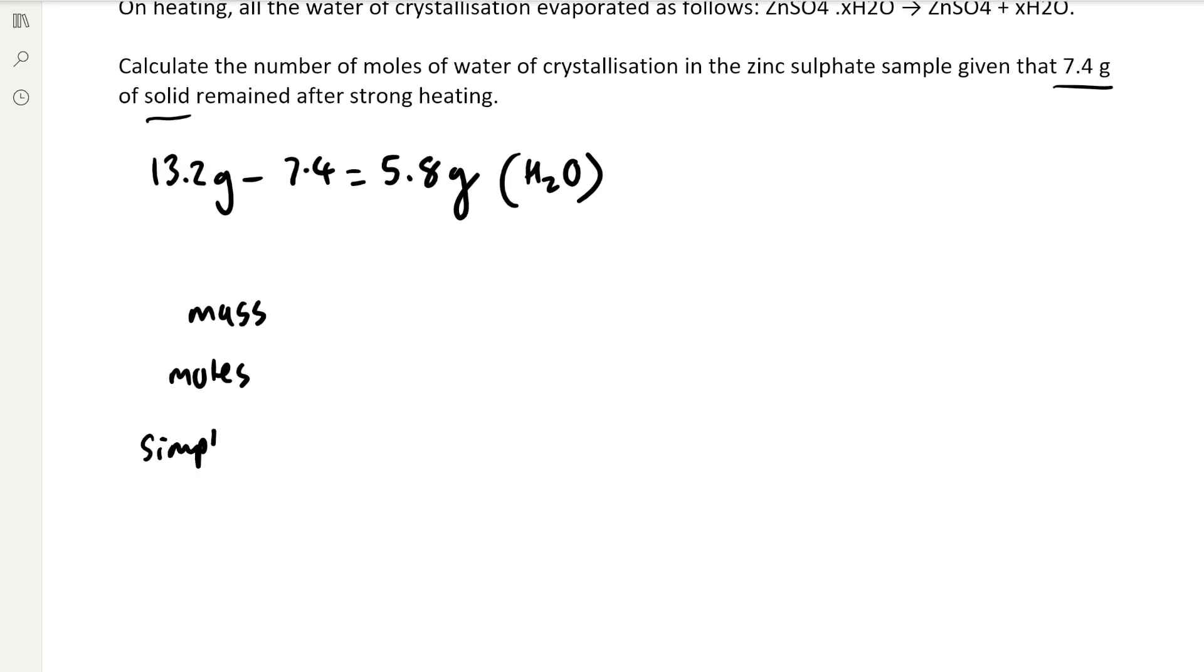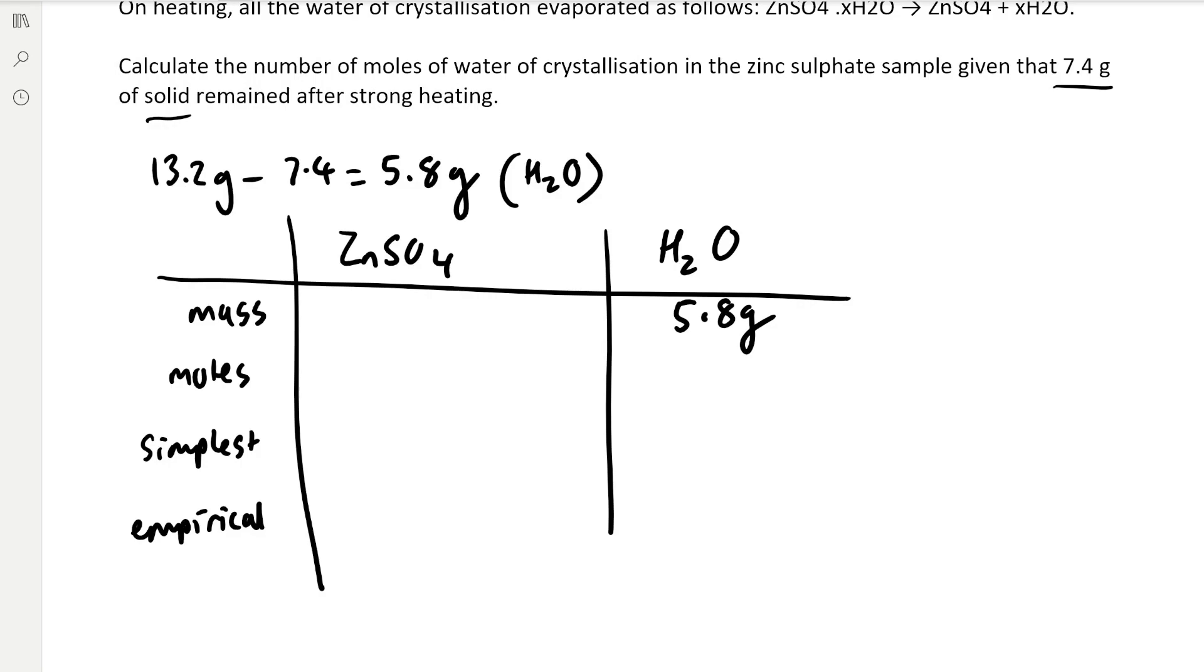We set out mass, moles, simplest, and empirical at the top with our compounds: ZnSO4 and H2O. Our mass of water is 5.8 grams. Our mass of ZnSO4 is 7.4 grams. Then we divide 7.4 grams by the MR of ZnSO4, which is 161.5, giving us 0.0458 moles.